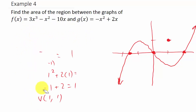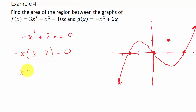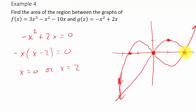Let's find the x-intercepts of g of x. We take negative x squared plus 2x, set it equal to 0, and factor out negative x to get negative x times (x minus 2) equals 0. So x equals 0 or x equals 2. The graph crosses at 0 and 2, opening downward, and looks something like this.